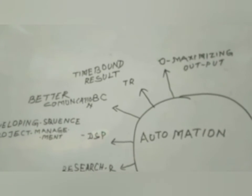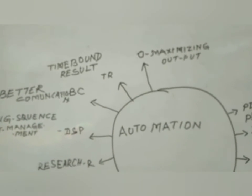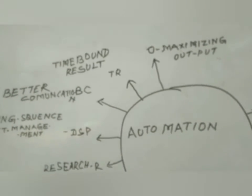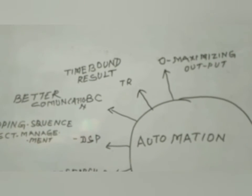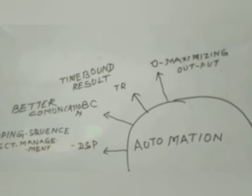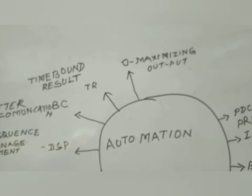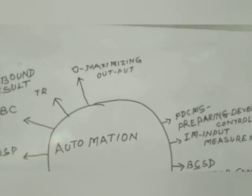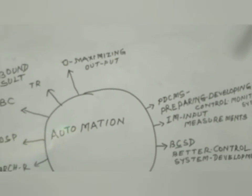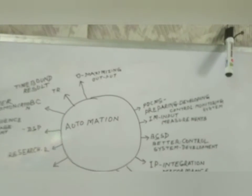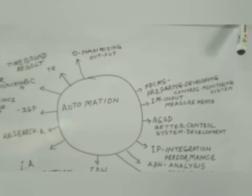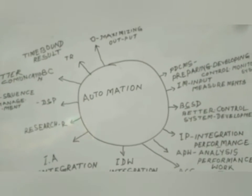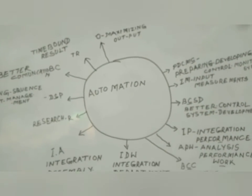Better communication helps to generate time-bound results. Time-bound result means result within the framework of a particular time. And last is not minimization but maximization of output. These are the basic things of the automation process.